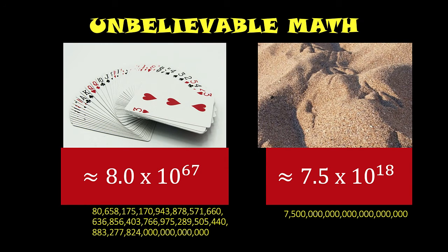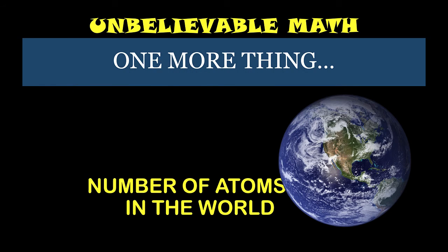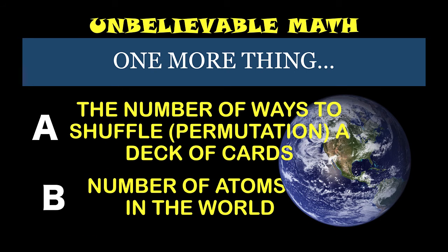And if you are not amazed at this time, let's look at one more example. Let's compare the permutation of 52 objects taken 52 at a time with the number of atoms in the world. So which one is larger? The number of ways to shuffle a deck of cards? Or the number of atoms in our world?